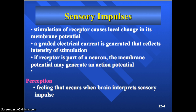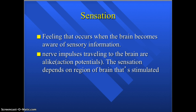There are two different terms we'll be using. Sensation occurs when the brain becomes aware of sensory impulses, and perception is how the brain interprets those sensory impulses. The sensation depends on the region of the brain that is stimulated — specifically we're talking about the cerebral cortex, the sensory cortex. Depending on where in that region it's stimulated, you will have different sensations.